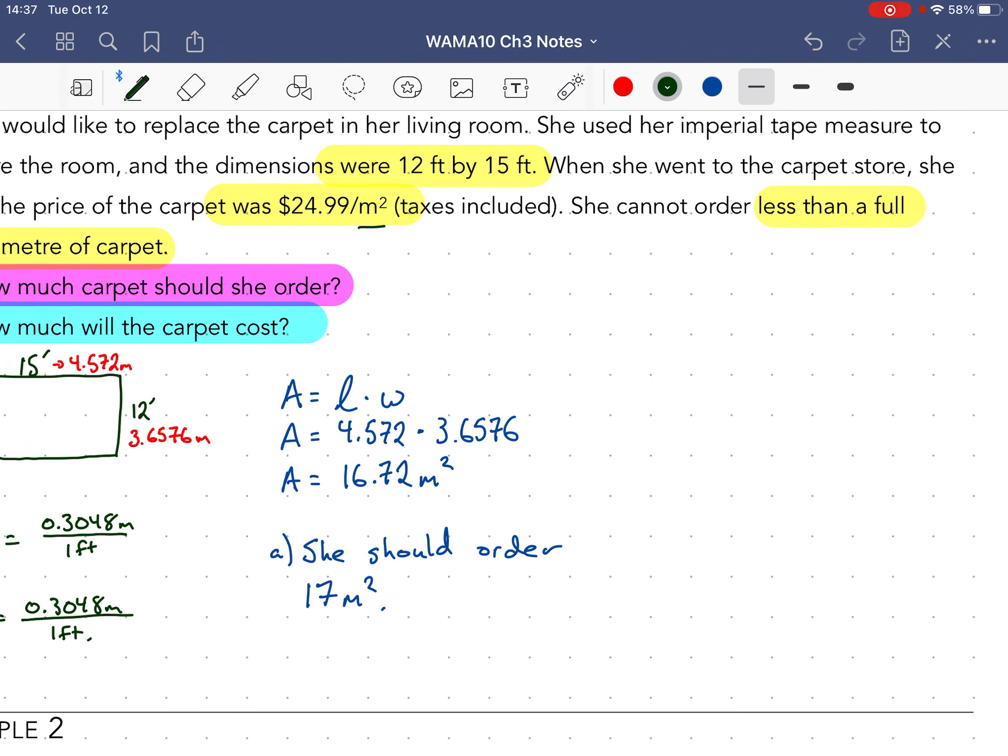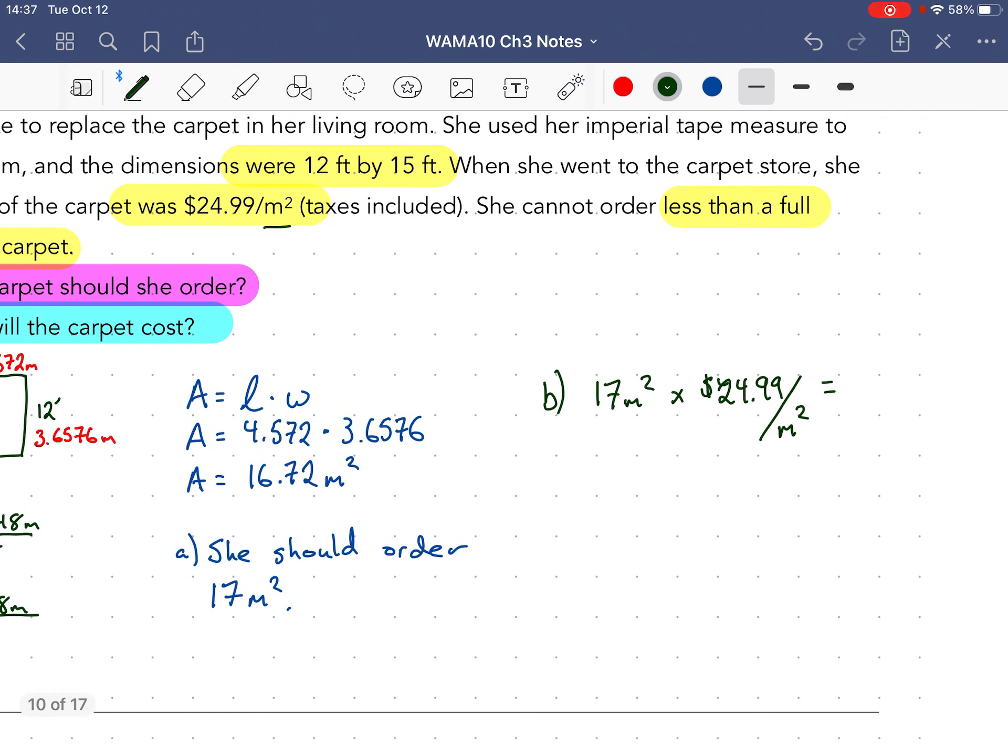So that's part A. Part B: how much will the carpet cost? Well, we're getting 17 square meters and that is $24.99 per square meter. So we just multiply those two numbers together, because she's ordering 17 whole square meters times $24.99: $424.83.